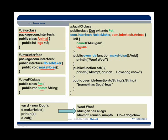So we've got this Java class, Java interface, and JavaFX class. Now, back to Dog. Notice that Dog extends Pet, Animal, as well as NoiseMaker. So it extends the Java class Animal, extends the JavaFX class Pet, and also extends the NoiseMaker interface — meaning we're going to have to implement that NoiseMaker interface in our JavaFX class.